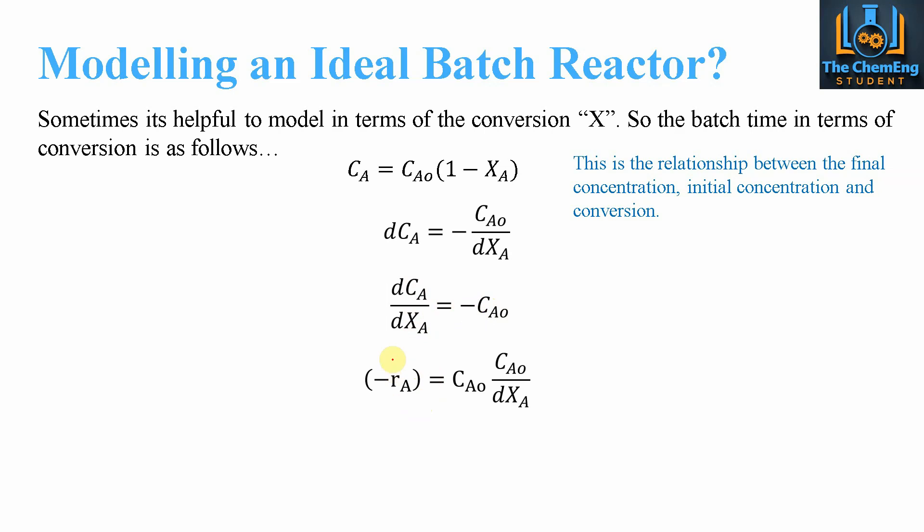Then we include -rA, the rate of the reaction. When we plug that into the previous equation, we can take out Ca0 as a constant, and the batch time equals the integral from 0 to the final conversion xA of dxA over -rA. Again, we take Ca0 out as a constant.